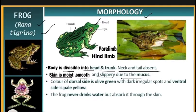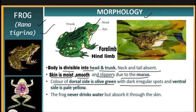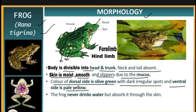Second, the skin is moist, smooth, and slippery due to the presence of mucus. Third, the color of the dorsal side is olive green with dark irregular spots, while the ventral side is pale yellow in color. Fourth, the frog never drinks water but absorbs it through the skin.